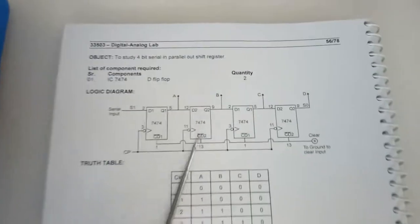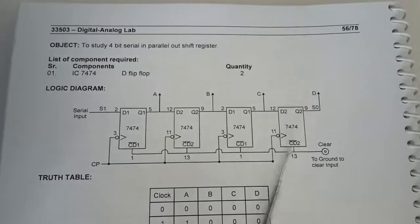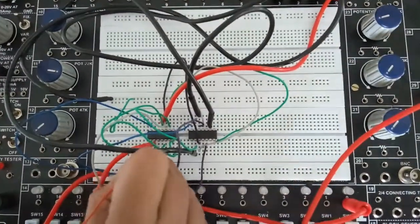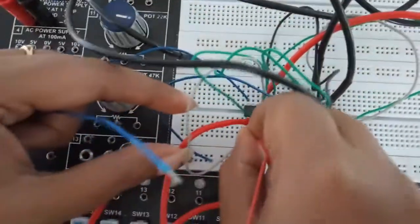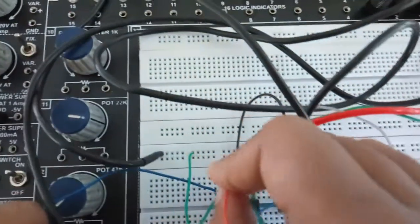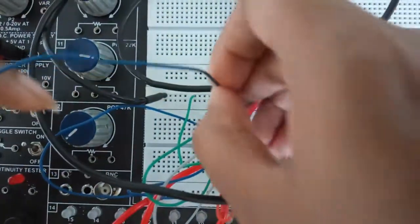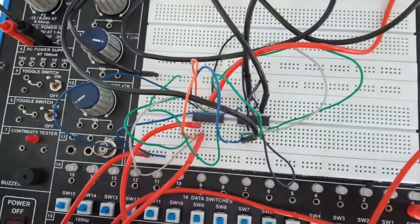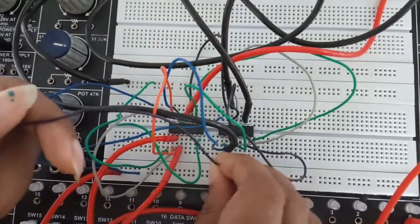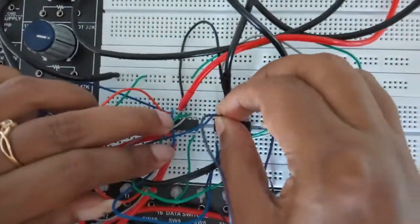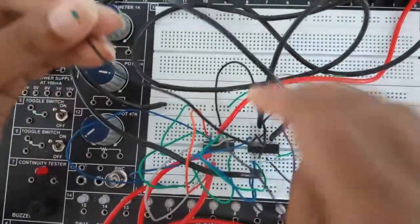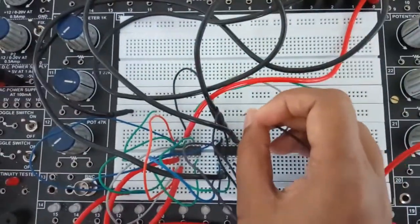Connect pin number 9 of the second IC to output D. Pin 1 and 13 of the first IC and pin 1 and 13 of the second IC are all connected together and need to be connected to ground to clear the input. Short pin number 1 and 13 of both ICs, then take out a connection wire to use for clearing by touching momentarily to ground.